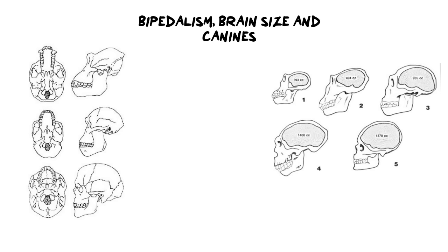We're going to start off with the skull differences. Now there are some really important skull differences that you need to know. The first one is linked to bipedalism and bipedalism is associated with the foramen magnum. If we look at the diagram on the left-hand side, I'm going to highlight the foramen — the opening into the skull where the spinal cord enters towards the brain. You'll notice that its position is different in each of these organisms. This picture has been arranged from oldest to newest skull, starting from the top with the oldest and the newest at the bottom.